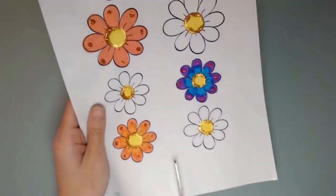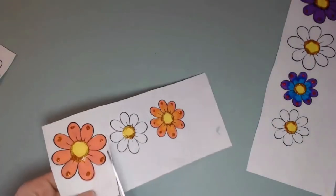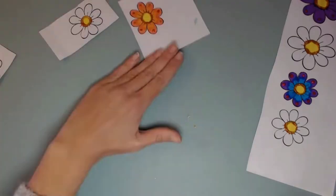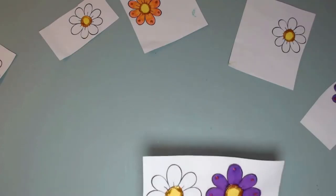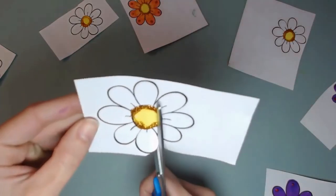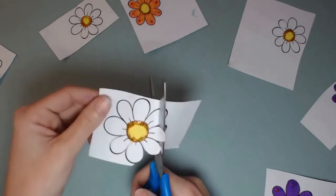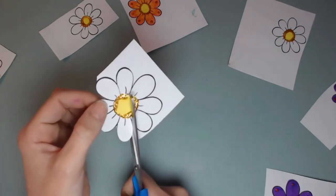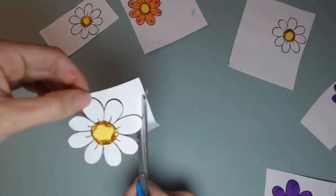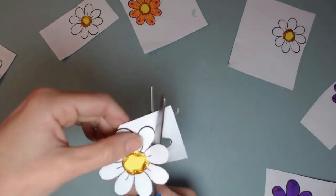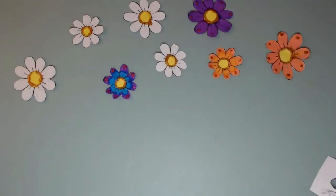Next you'll be cutting out your flowers. It's a good idea to cut your flowers out into small squares first, and then you're carefully going to cut out each flower. This is going to take some time, so be patient. Don't rush it and do a great job. If you've used glitter glue, be careful not to smudge it. Great work.